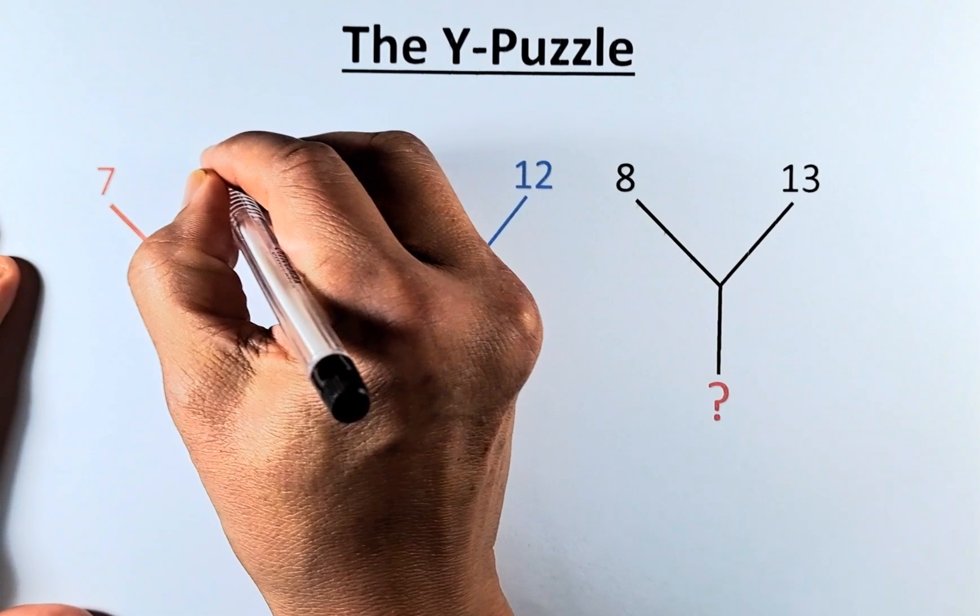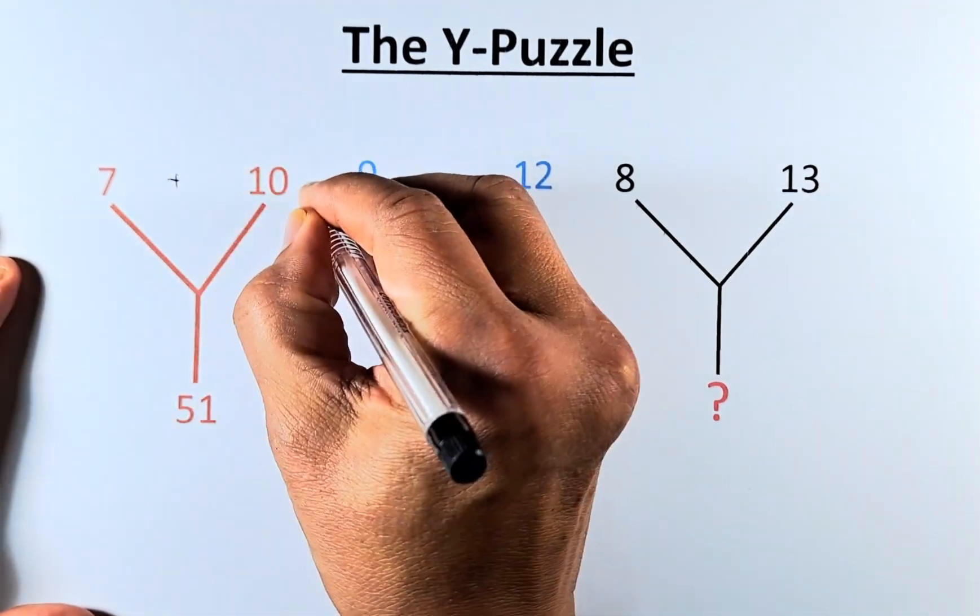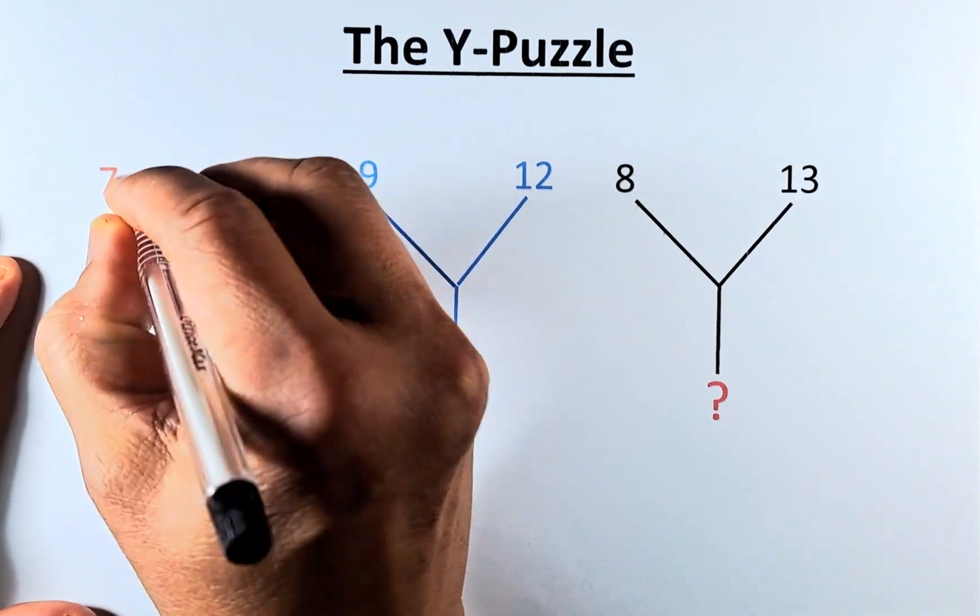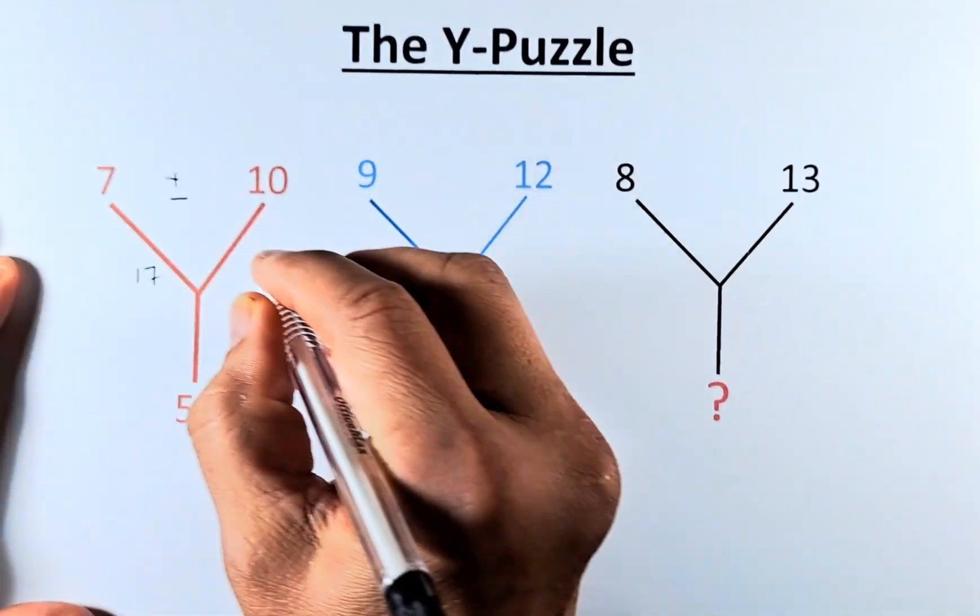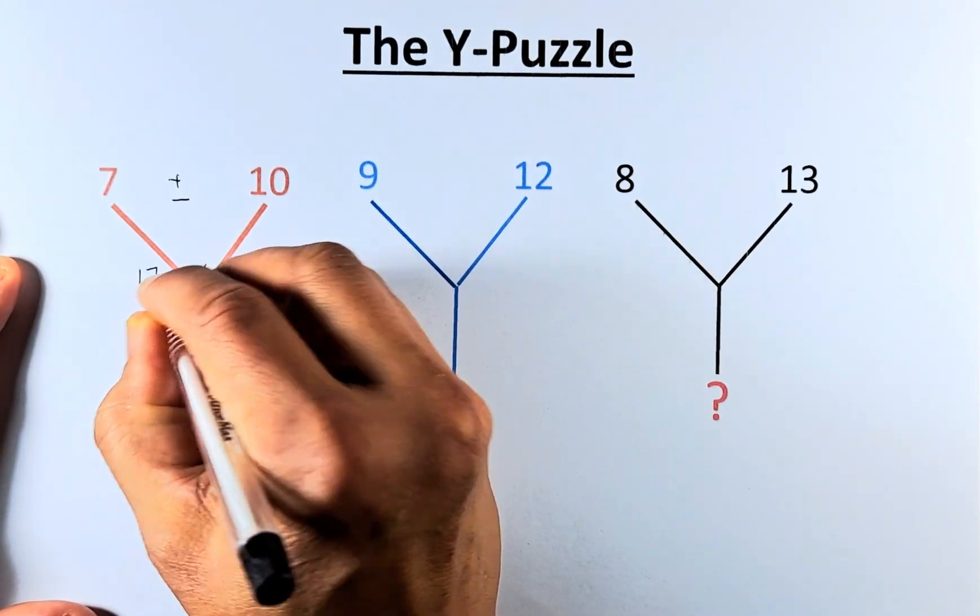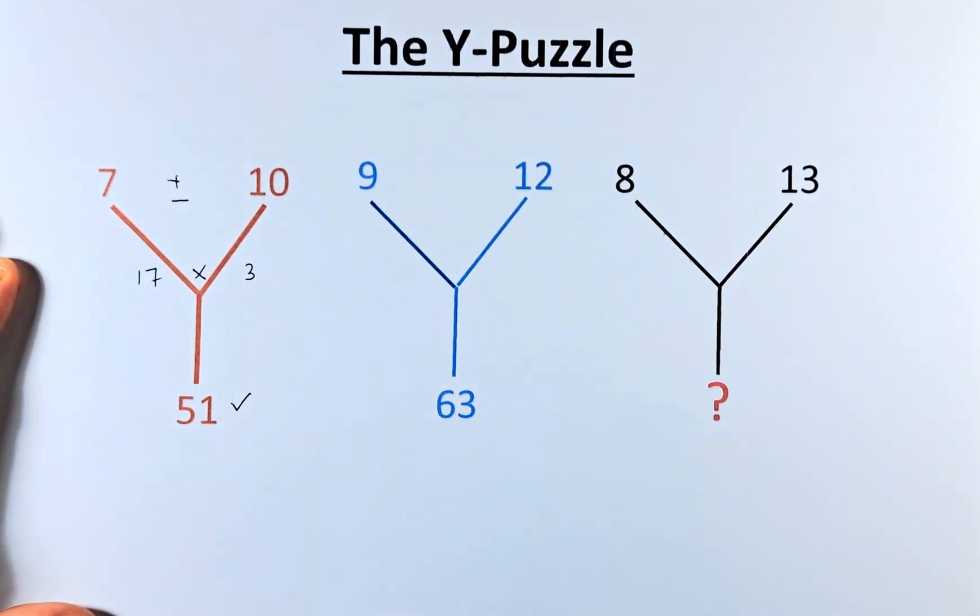So what we do, we're going to add first. 7 plus 10 is going to be 17. And then we're going to minus the second part. 10 minus 7, the second number minus the first number. 10 minus 7 is going to be 3. And then we're going to multiply them. 17 times 3, that will give us 51.